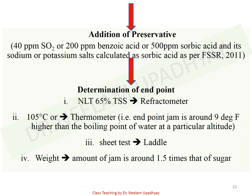The next step is determination of end point. Total soluble solids should be 65 percent — not less; if more it is okay, but if too high it may result in gummy textured jam, which is undesirable. Total soluble solids can be determined using a refractometer. Another indicator is temperature: 105 degrees Celsius is generally recommended — if the temperature reaches 105 degrees Celsius, the jam is prepared.